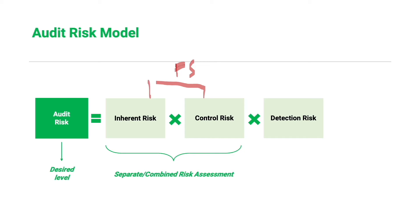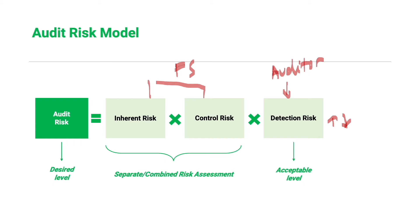The last component, detection risk, is a function of the auditor's evidence-gathering procedures. It depends on our audit procedures and is the only component the auditor can control. Detection risk can be manipulated by various means — for example, we can change the composition of the audit team, the duration of our work, or the amount of evidence we plan to obtain.